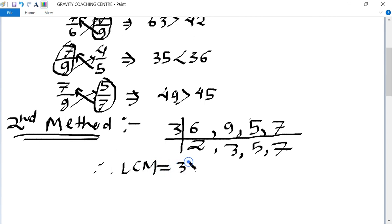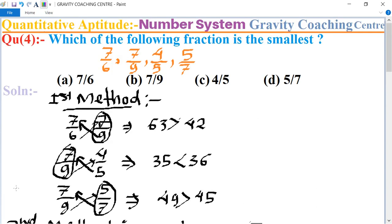Therefore LCM equal to 3 multiply 2 multiply 3 multiply 5 multiply 7 equal to 630.